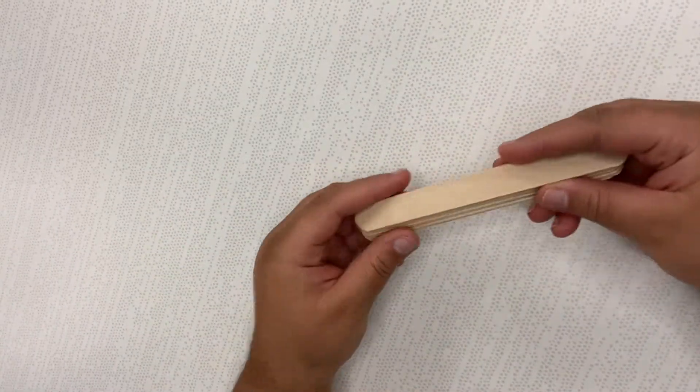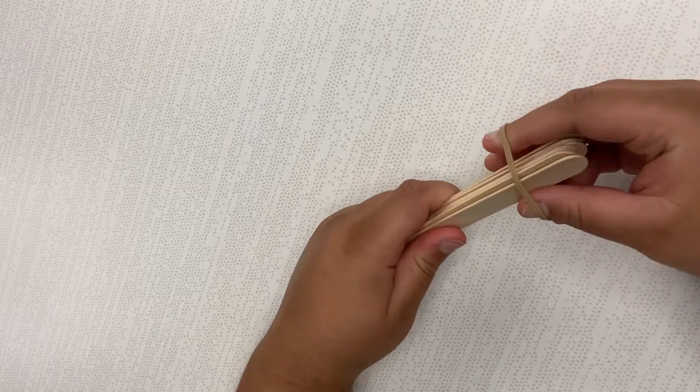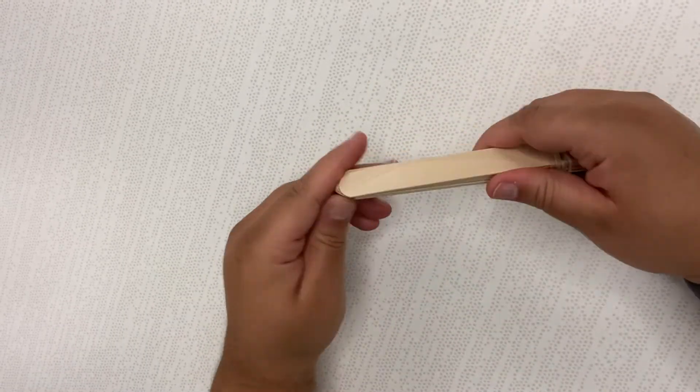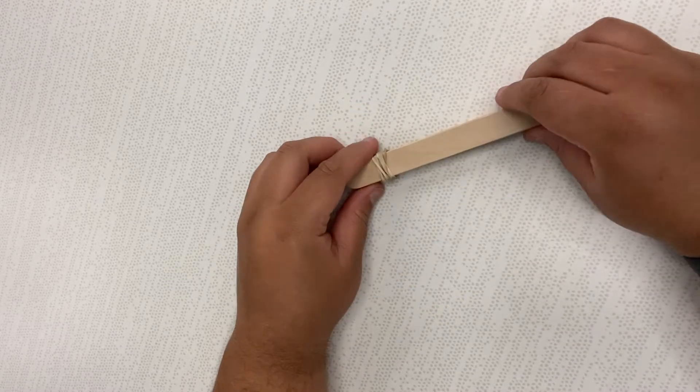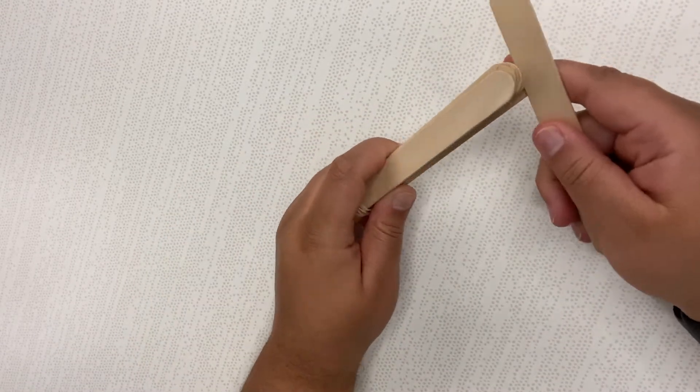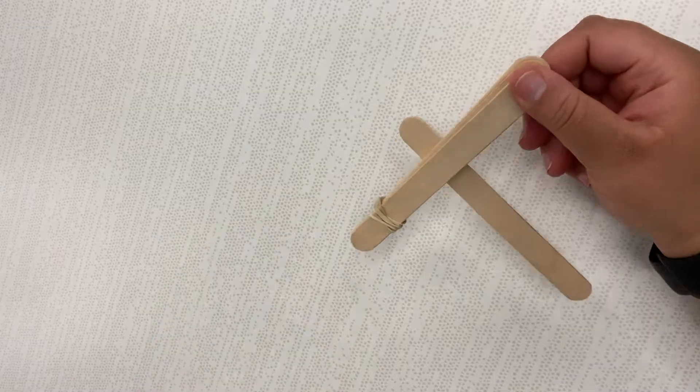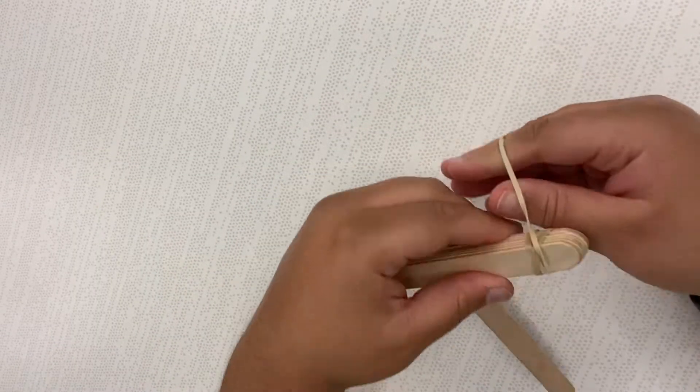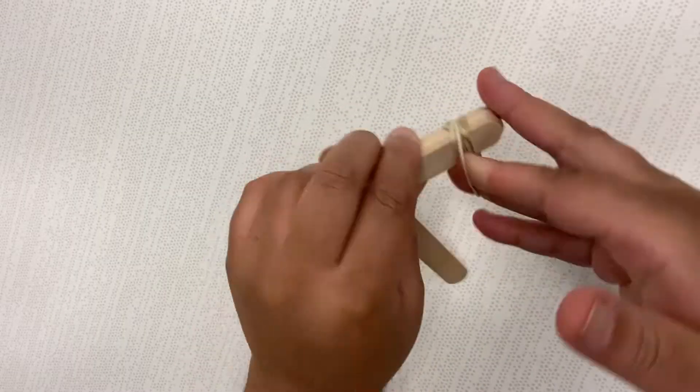Take eight craft sticks and stack them one on top of the other. Wind a rubber band tightly around one end of the stack. Go ahead and push another stick in between sticks seven and eight. Wind another rubber band on the other end of the stack.